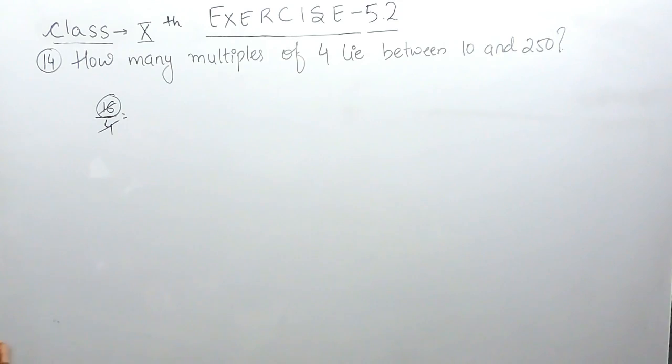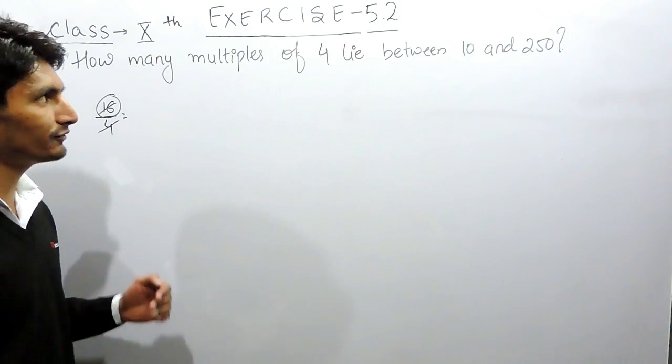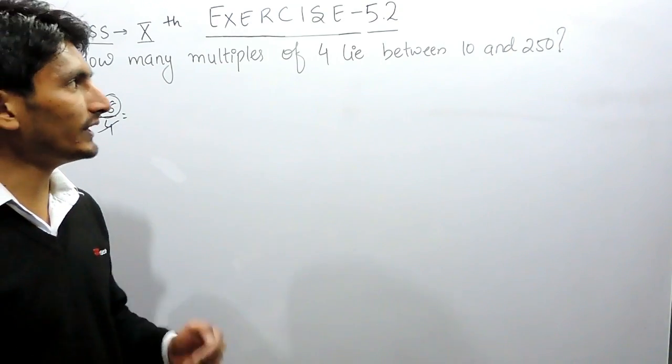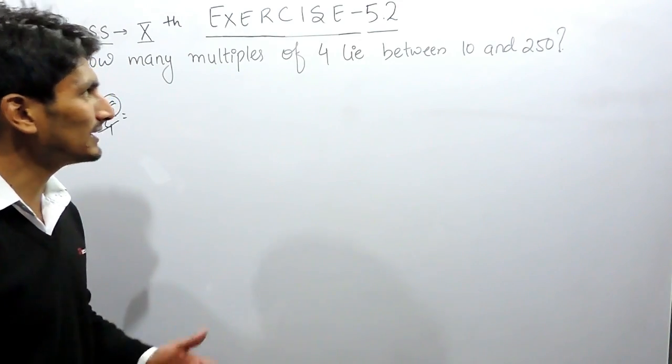Or in other words, multiples are basically the table of 4. Multiples are 4, 8, 12, 16, 20, 24 and so on.